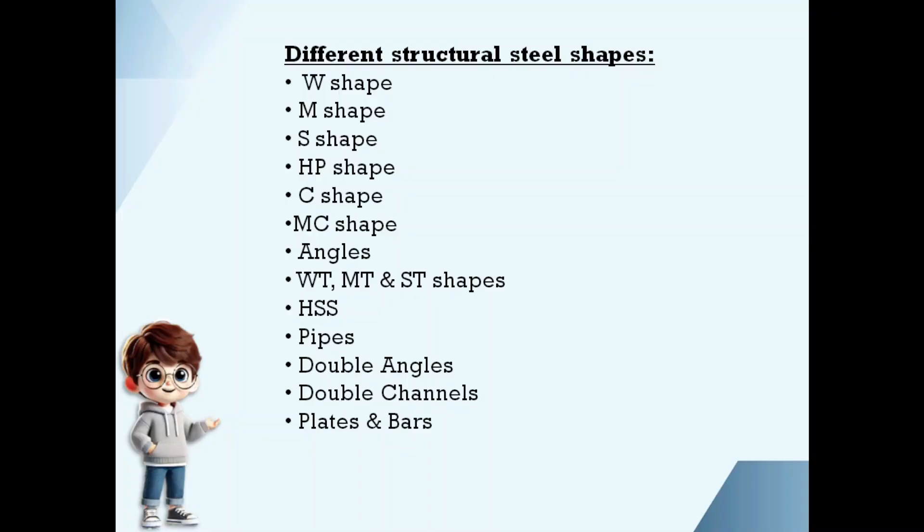Here are the list of structural steel shapes: W, M, S, HP, C, MC, angles, WT, MT, ST, HSS, pipes, double angles, double channels, plates and bars.